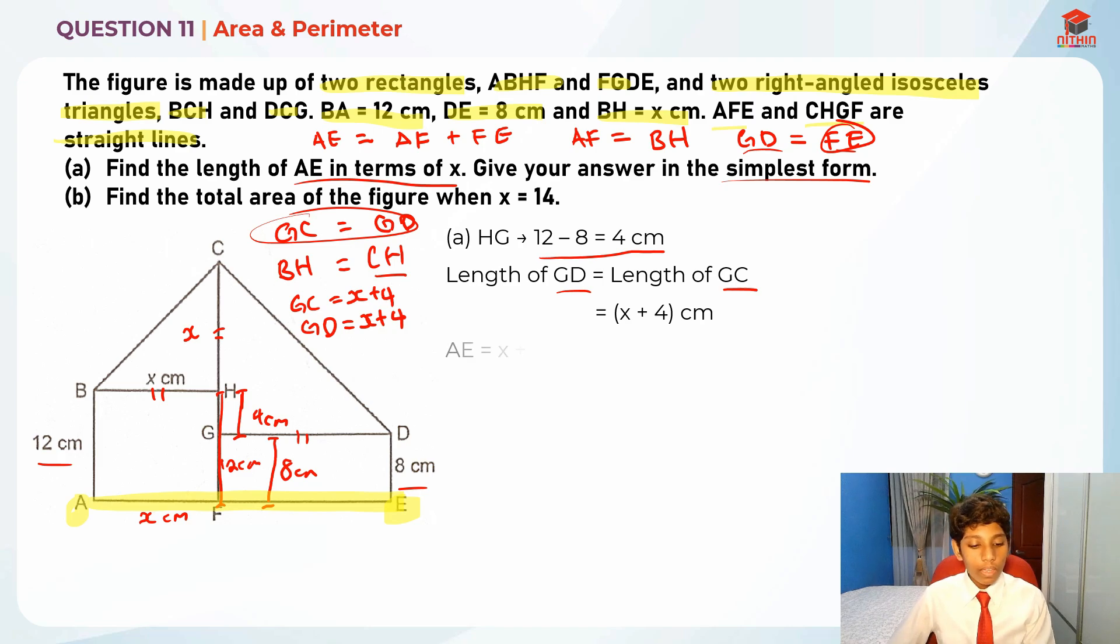Thus AE is equal to x cm plus x plus 4 cm, which gives us 2x plus 4 cm. This is the answer for part A and I hope you understood.